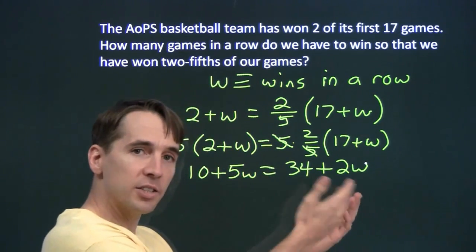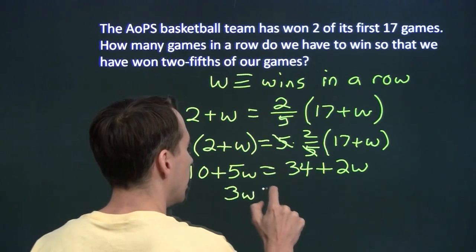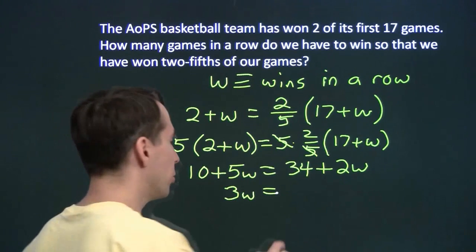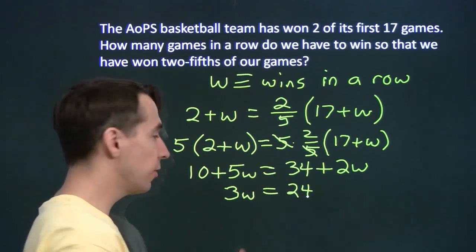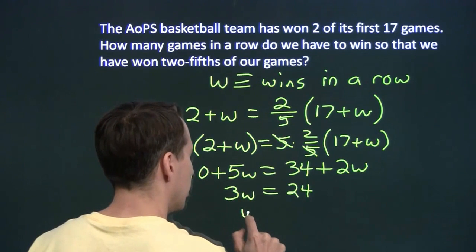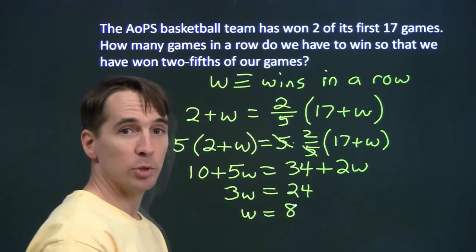Once again, we isolate the variable. We'll subtract 2w from both sides. We'll be left with 3w over here. And we'll subtract the 10 from both sides. 34 minus 10 is 24. Then we divide by 3. And we see that we need to win 8 games in a row.